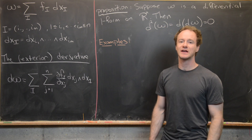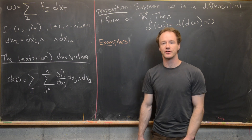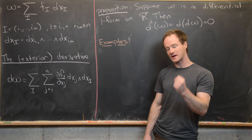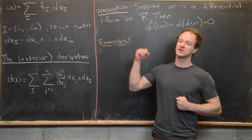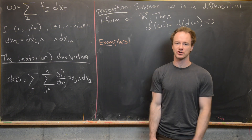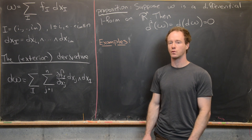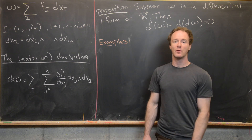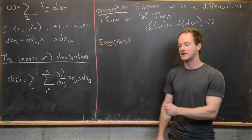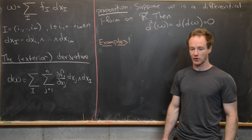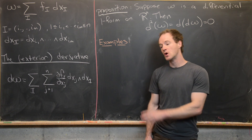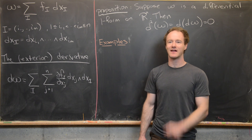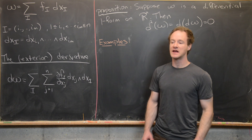We've spent some videos looking at the exterior derivative that takes differential m-forms and turns them into differential m+1 forms. Today we want to look at a very special property of this derivative and work out some examples that highlight that property.